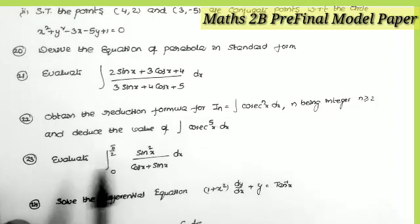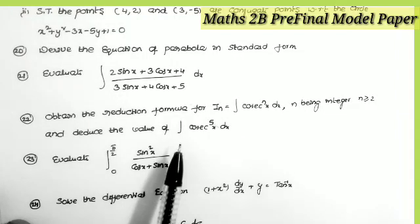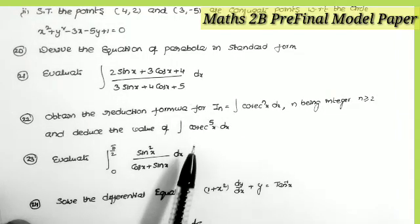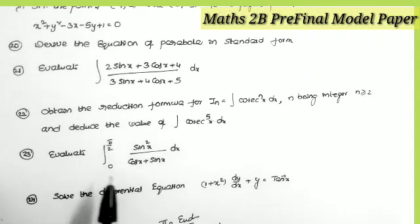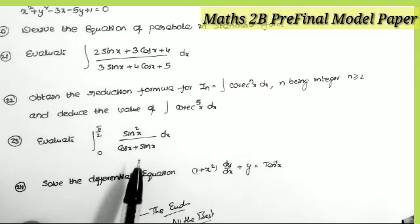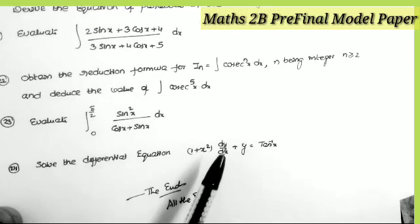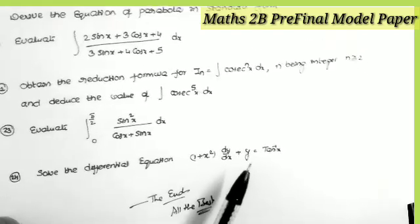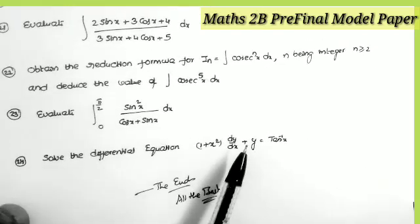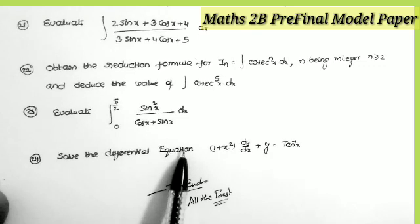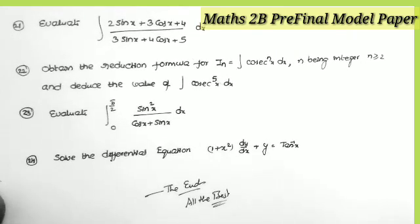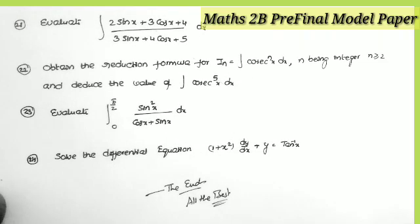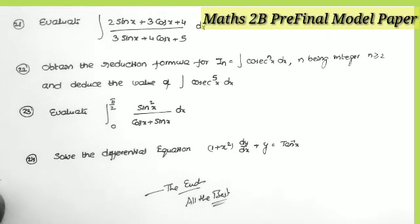Question 22: obtain the reduction formula for Iₙ = integral of cosecⁿx dx where n is an integer, and hence evaluate the integral of cosec⁵x dx. Question 23: evaluate the integral from 0 to π/2 of sin²x / (cosx + sinx) dx. The last question: solve the linear differential equation (1 + x²) dy/dx + y = tan⁻¹x. So this is the complete model paper.